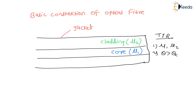For total internal reflection, the refractive index of the core — mu1 — must be greater than mu2, the refractive index of the cladding. So here mu1 will be greater than mu2, and only then will total internal reflection be possible. The material for cladding and core is generally glass, or sometimes plastic, depending on the application.